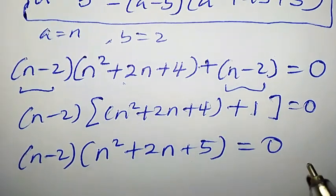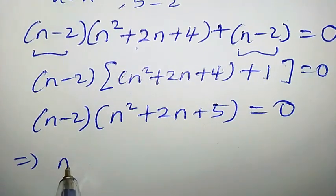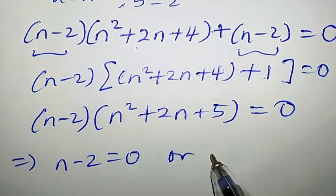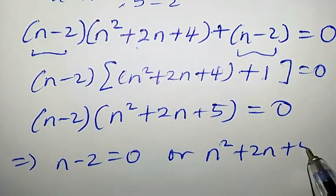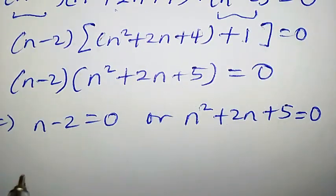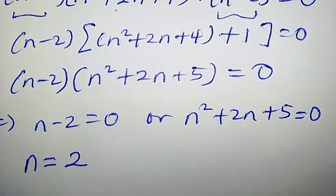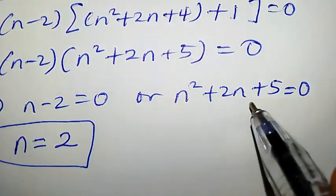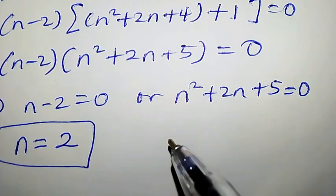This implies that n minus 2 equals 0, or n² plus 2n plus 5 equals 0. Clearly, from the first part, our value of n is equal to 2. This is the first solution. Now let us consider this quadratic equation — we can solve it using the quadratic formula.